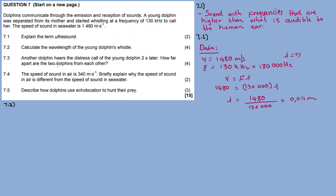Question 7.3: Another dolphin hears the distress call of the young dolphin two seconds later. How far apart are the two dolphins from each other? So another dolphin — possibly the mother — heard the distress call. Let's say A is the young dolphin and B is the adult dolphin. The young one sends out sound waves, and two seconds later the adult dolphin hears the signal.